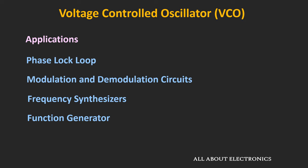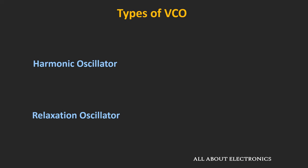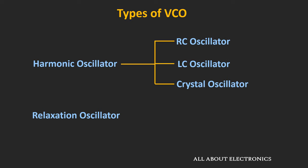There are two types of VCOs: the harmonic oscillator and the relaxation oscillator. The harmonic oscillator generates sinusoidal signals, while the relaxation oscillator generates either square, triangular, or sawtooth waves. Commercially, both types of oscillators are available in IC packages.